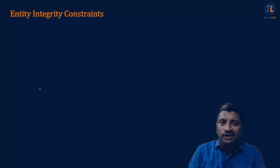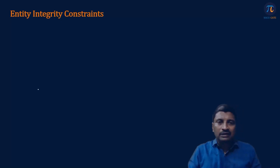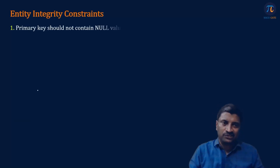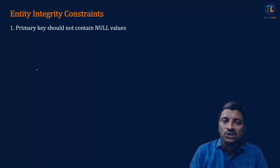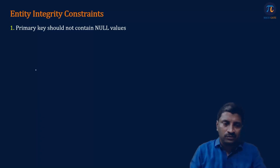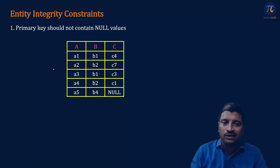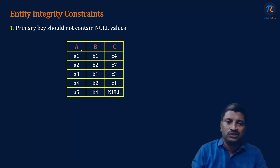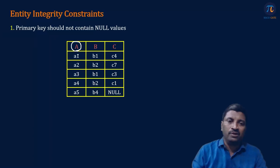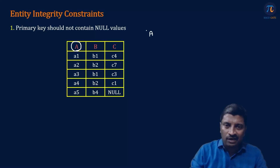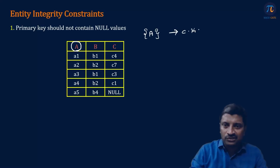The first one is Entity Integrity Constraints. What Entity Integrity Constraints says? The primary key should not contain null values. For example, suppose I have a relation with three attributes A, B, C. Now if we observe the values of attribute A, all the five values are distinct.